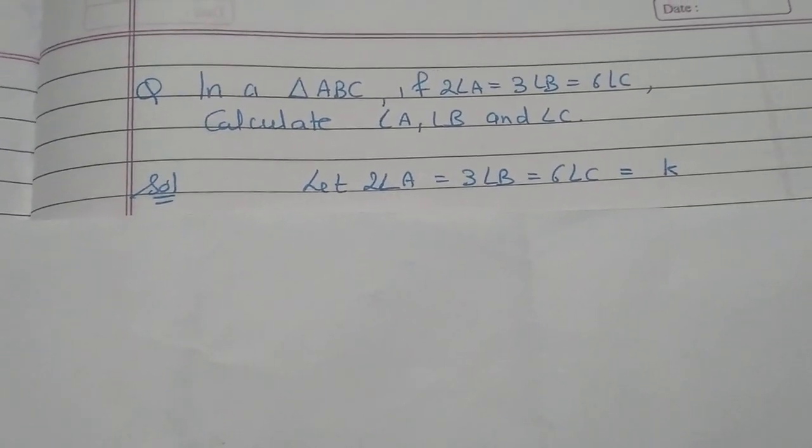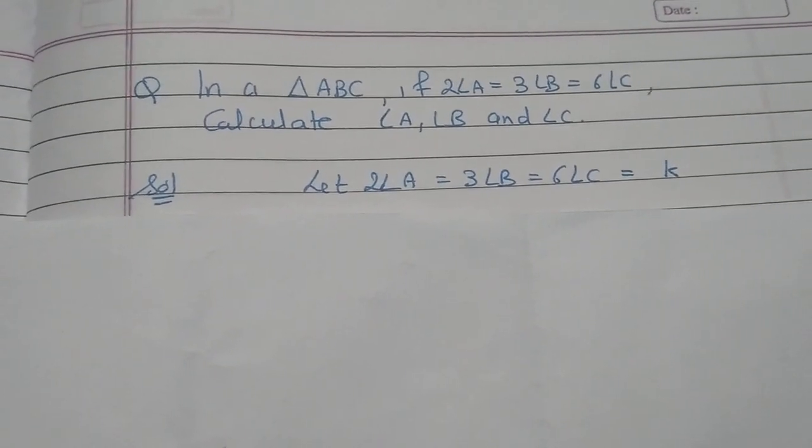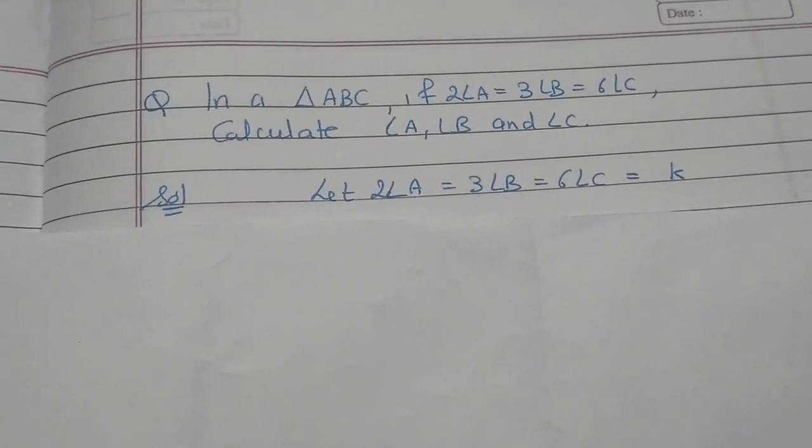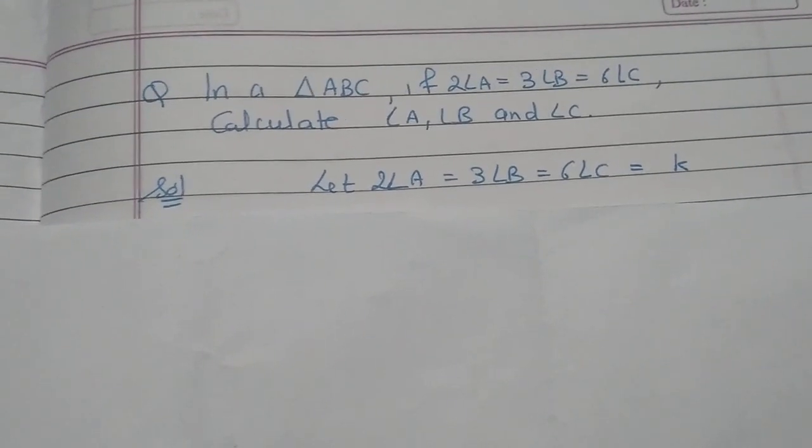So suppose, let 2 angle A equals 3 angle B equals 6 angle C is equal to K. We are letting it K, that there will be a value.